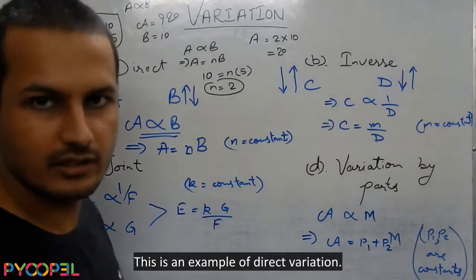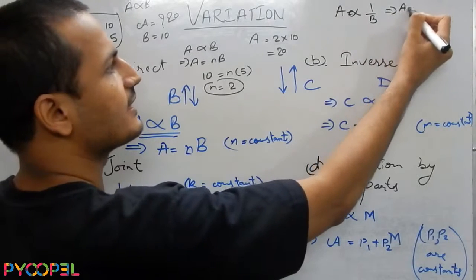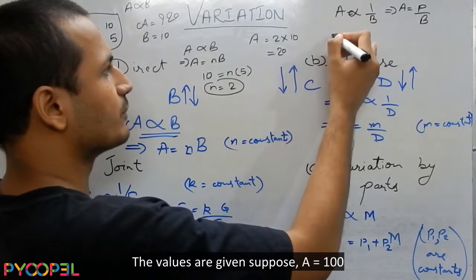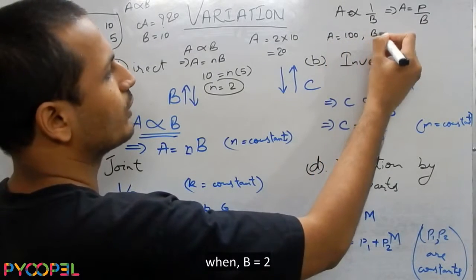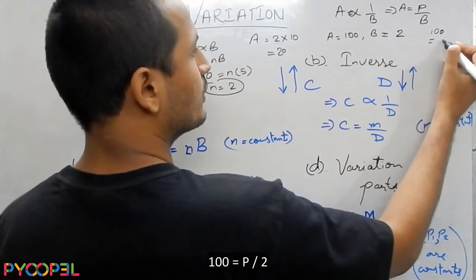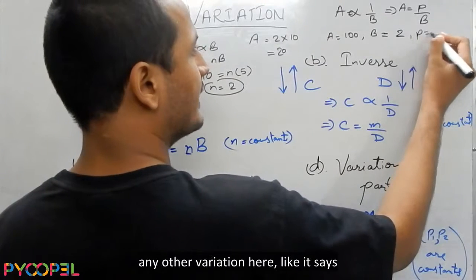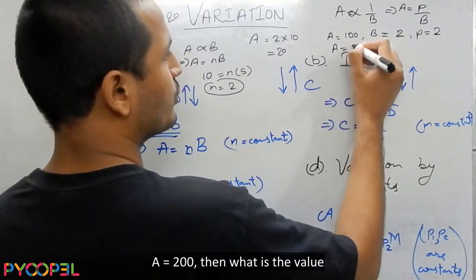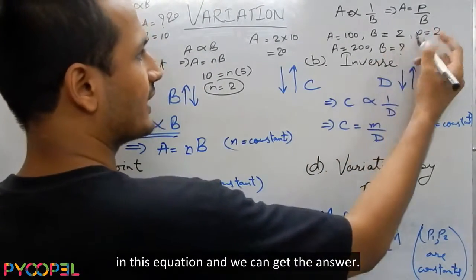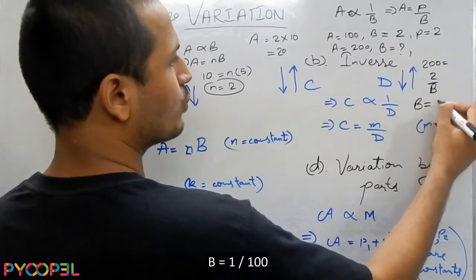This is an example of direct variation. Similarly, for inverse variation: suppose A is inversely proportional to B, which implies A = P/B where P is a constant. Given A = 100 when B = 2, we get 100 = P/2, so P = 200. If the question then asks for B when A = 200, we put the values into the equation: 200 = 200/B, so B = 1/100.